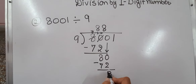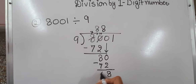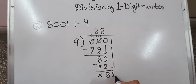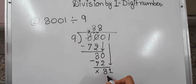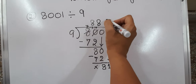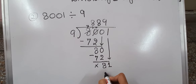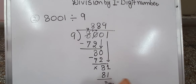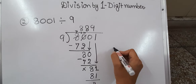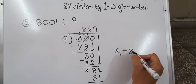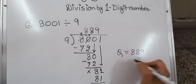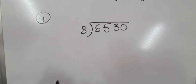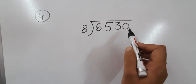This 1 will come down. Now we know that 9×9 is 81, so we write 81 here and get 0 in the end. So the answer — the quotient — is 889.